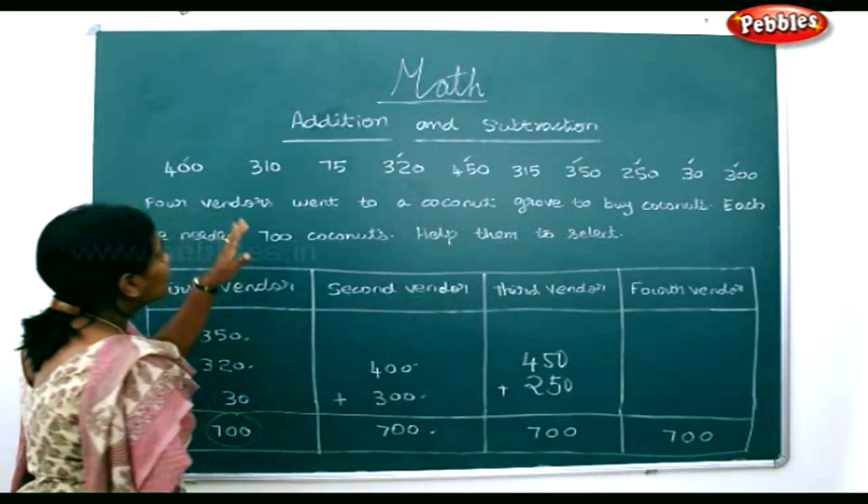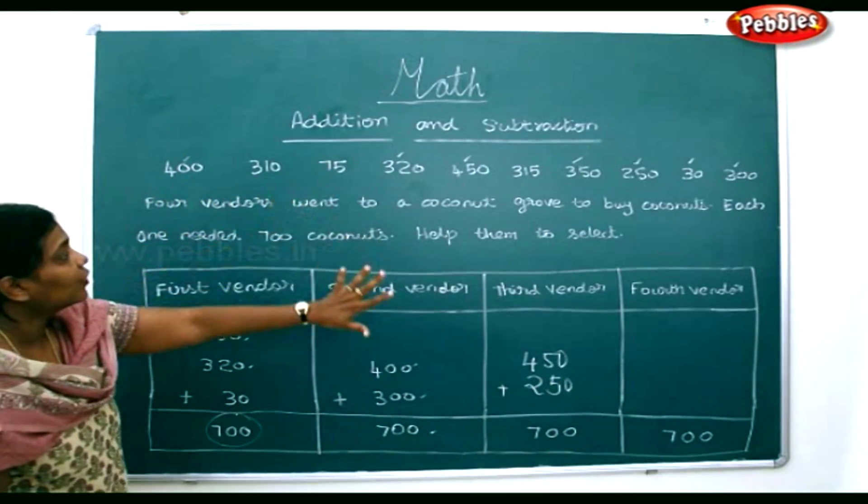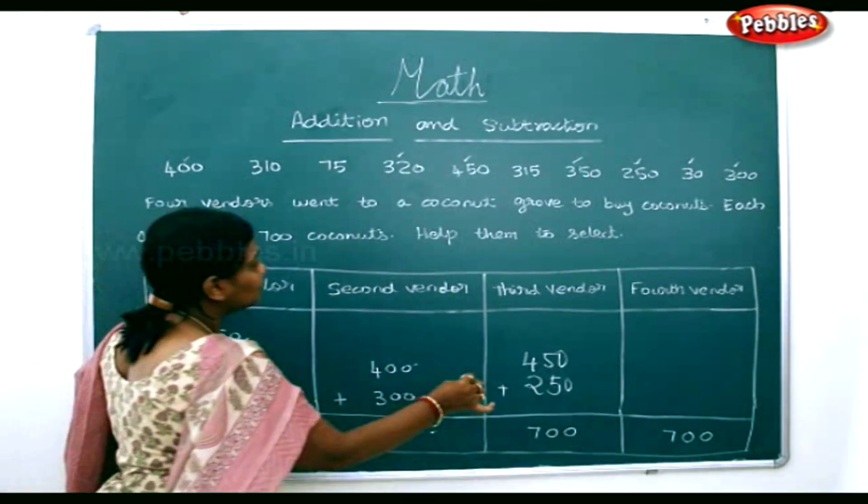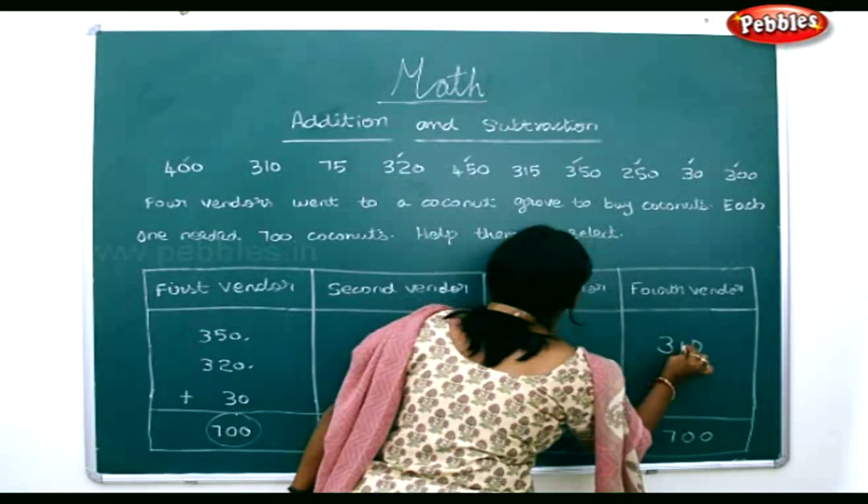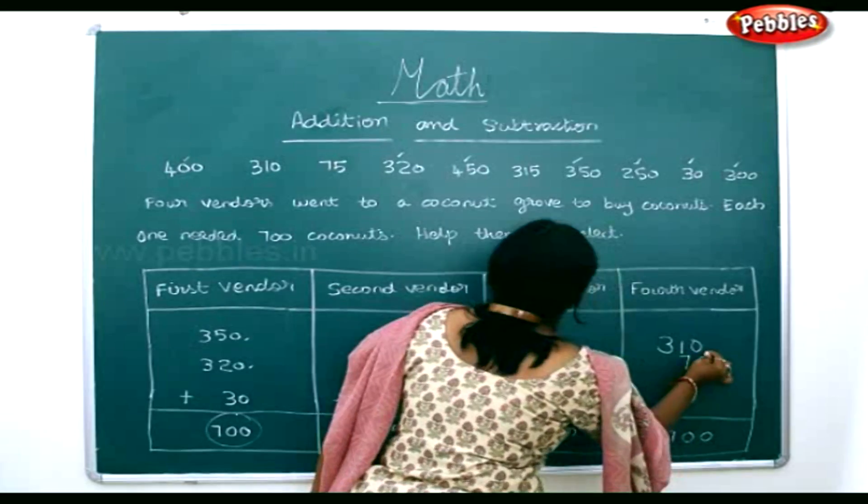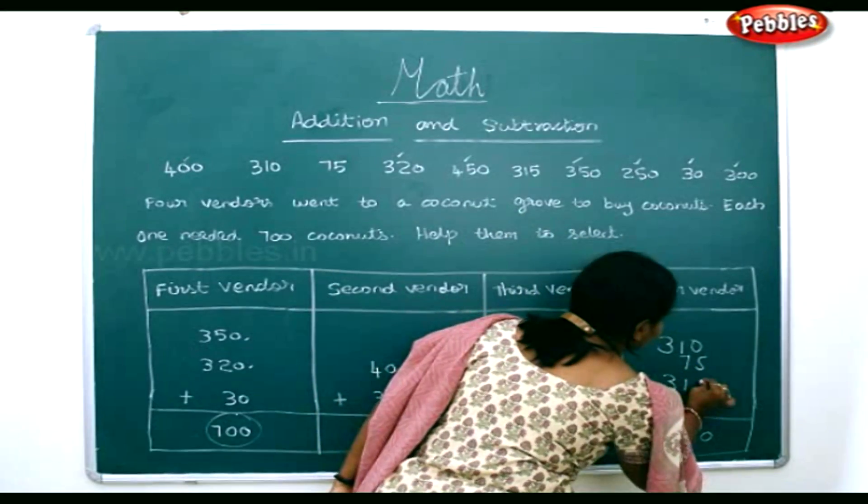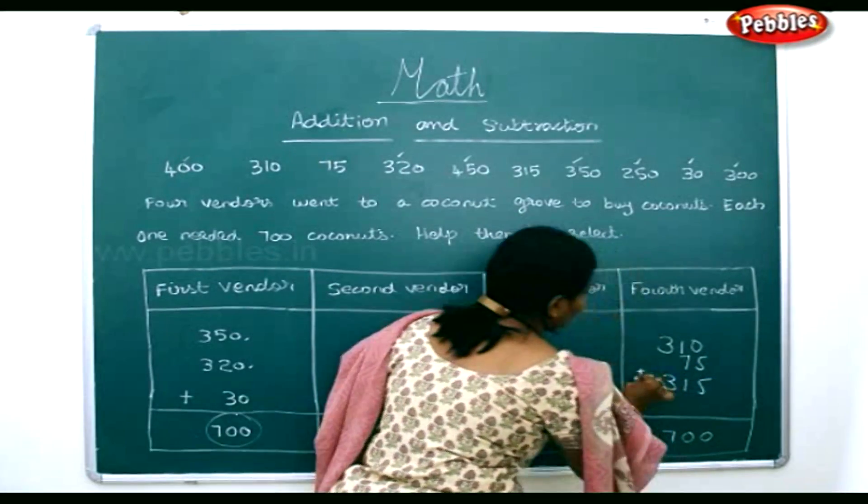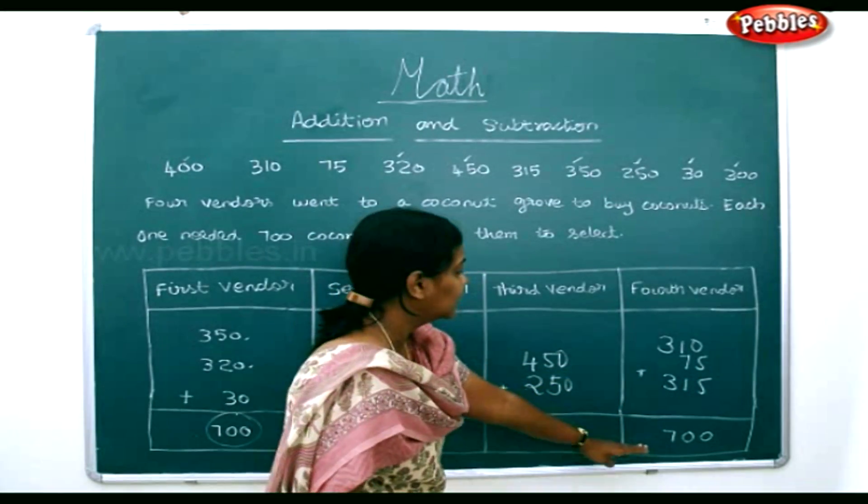The fourth vendor, they have the remaining left for him. So it would be 310 plus 75 plus 315. If you count these three, it will form to 700.